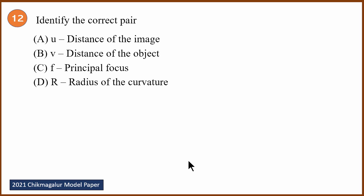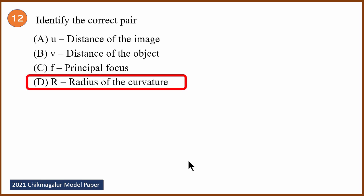Twelfth question: identify the correct pair. U is the distance of the object, V is the distance of the image, F is the focal length — not the principal focus. The correct answer is R, which stands for radius of curvature.